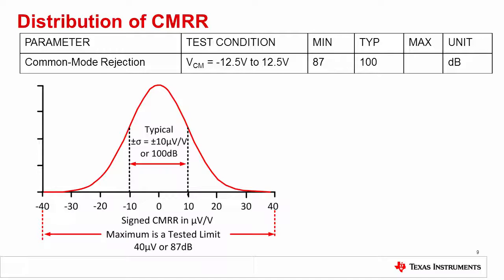Common mode rejection relates to how well the early voltage of the input transistors match. It's possible for the VOS versus common mode voltage to have a positive or negative slope. In fact, if you were to look at the distribution of the common mode rejection ratio, you would get a Gaussian distribution.